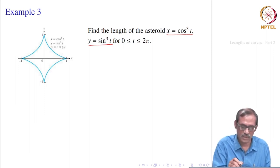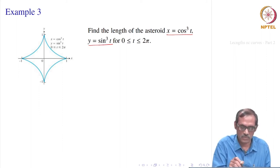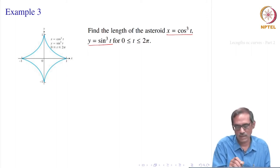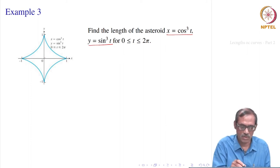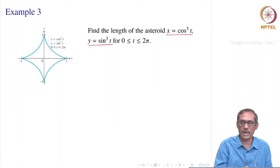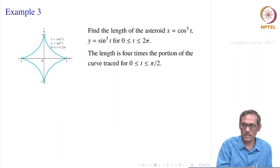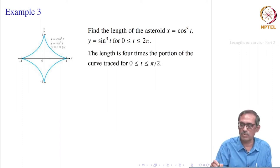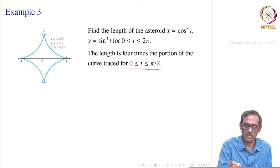So its length — since it is symmetric, we can say it is four times the length of any one petal. In that case, t will vary from 0 to pi by 2. So the length is four times the portion of the curve traced for t from 0 to pi by 2.